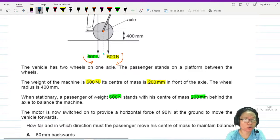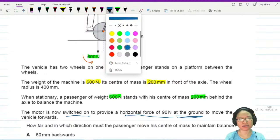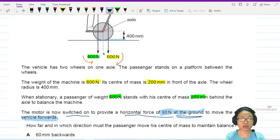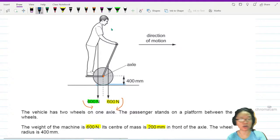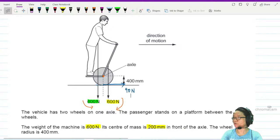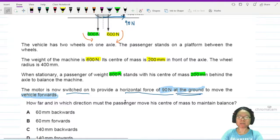The motor is now switched on to provide a horizontal force of 90 Newton at the ground. I got to label this 90 Newton at the ground. Where is the ground? Here. Where's the direction of the force? We want to move the vehicle forward. So this direction of the force has to be forward because the wheel is going to move forward. So this is my 90 Newton. How far and in which direction must the passenger move his center of mass to maintain balance?